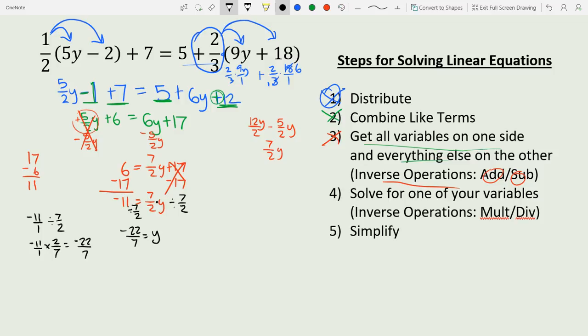We have negative 22/7 equals y or 1y, and we can leave it like that. You could convert it into a mixed number: 7 goes into 22 three times with 1 left over, and it's negative. So we could say this is negative 3 and 1/7, which is equivalent to y. Either one works.